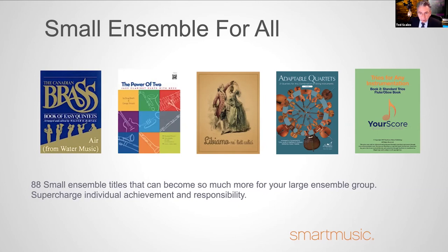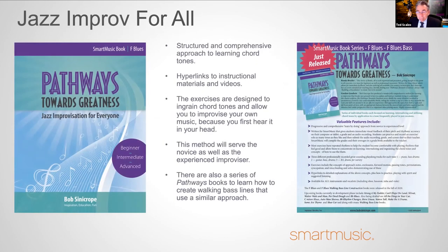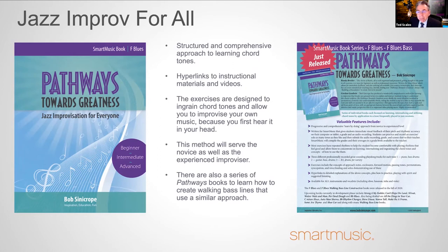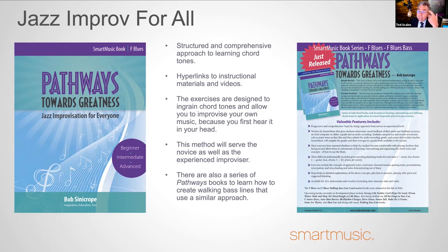This book by Bob Sinecrope is really an important step — it's the book I wish I had as a beginning jazz student and as a high school band director teaching kids to improvise. It meets a whole bunch of needs, and the beauty of it is it's not written just for traditional jazz instruments. If you have an oboist, a French horn player, or strings, they all could be working on their jazz improvisation with this method. Bob has done a fantastic job of boiling it down to its lowest common denominator and then gradually seasoning your skills with the next flavor needed to reach the next level of jazz improvisation. There are hyperlinks on all the pages.